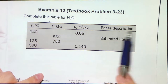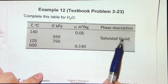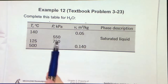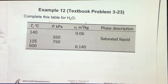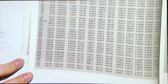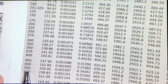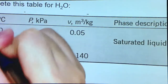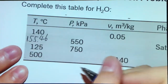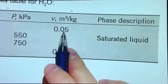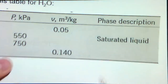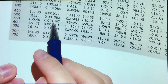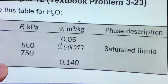First of all, some of the phases have been given to you, so you can check the table very quickly. I'll do the second row first because it's extremely easy. We have this pressure given and it is told that it is in a saturated liquid state — that means we just go to Table A5, 550 kilopascal. We get a saturation temperature of 155.46°C. Since it is a saturated liquid, V equals VF, which from the table is 0.001097. The second row is finished.